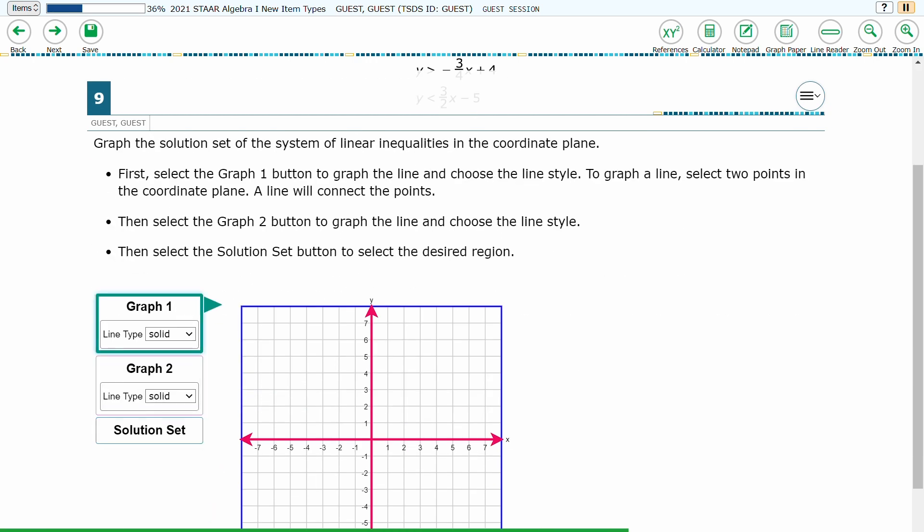Once graph 1 is selected, it will be outlined in green. The point selected and the line that is drawn from graph 1 will be green.